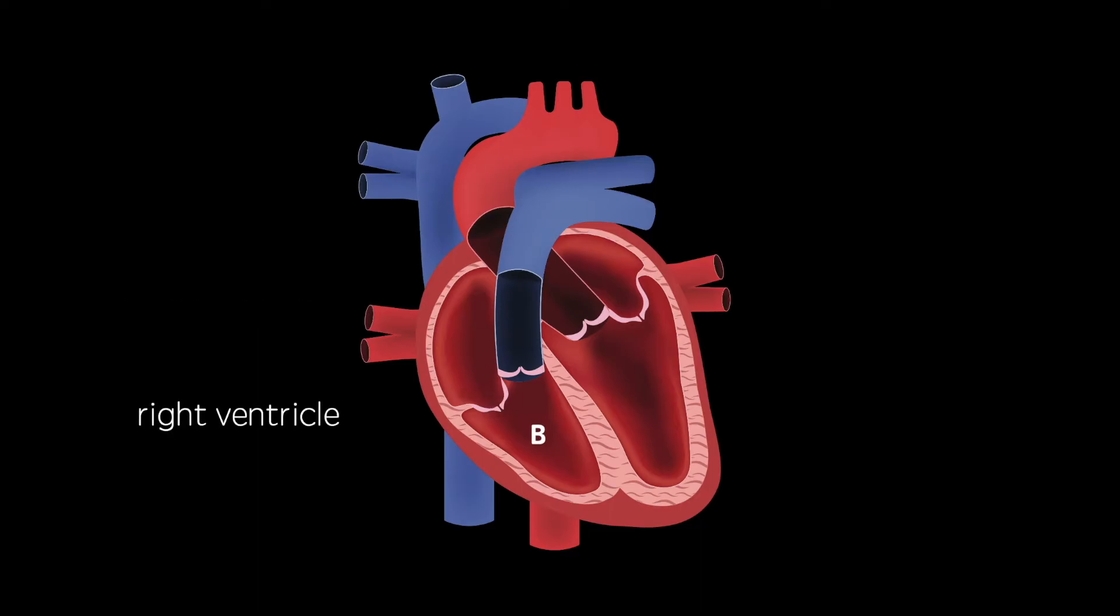The right ventricle then contracts, forcing open the pulmonary valve and blood flows out of the pulmonary artery. This carries the blood to the lungs, where it becomes oxygenated in the alveolar capillaries.